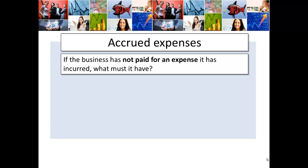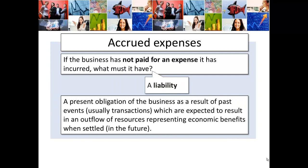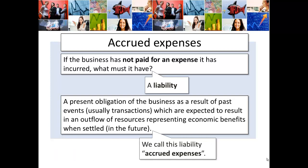So if a business has not paid for an expense — it has an expense on the books but it hasn't paid for it — what must it have? It's a liability, which is a present obligation of the business as a result of past events, the transaction, which are expected to result in an outflow of resources representing economic benefits when settled at a later date in the future. We call this liability accrued expenses.